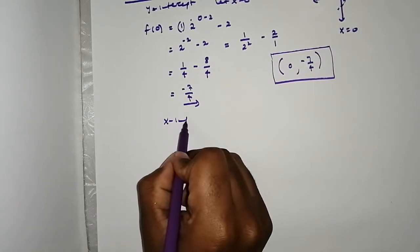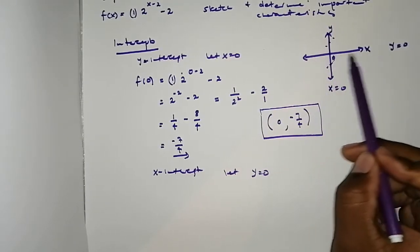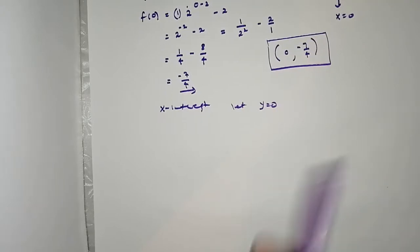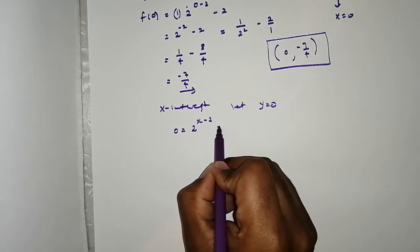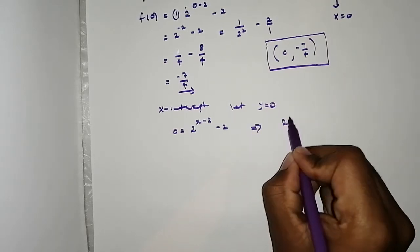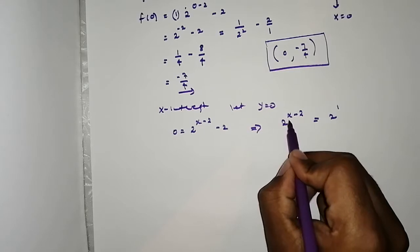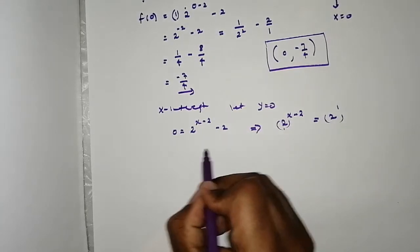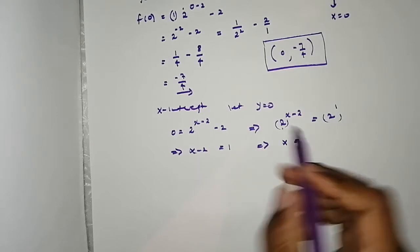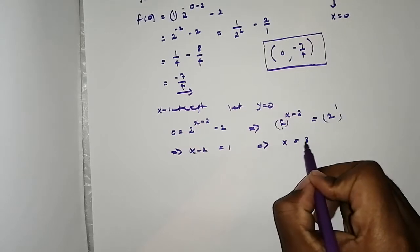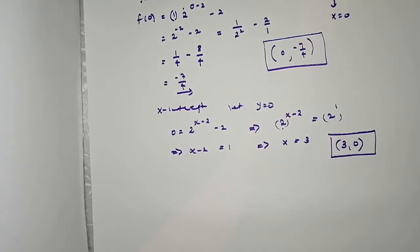Secondly, we find the x-intercept by letting y = 0. So 0 = 2 to the (x minus 2) minus 2. That means 2 to the (x minus 2) = 2, which is 2 to the 1. Since the bases are the same, x minus 2 = 1, so x = 3. The x-intercept is (3, 0).